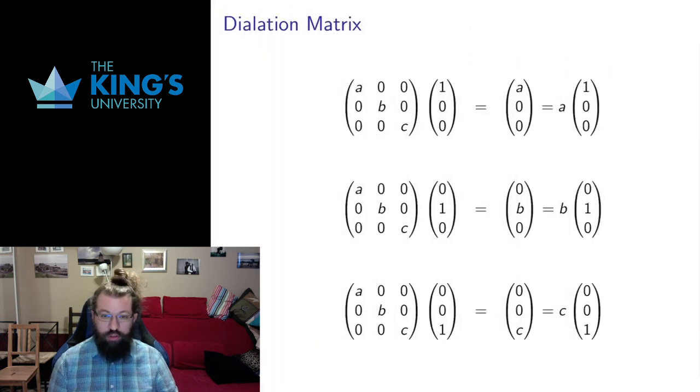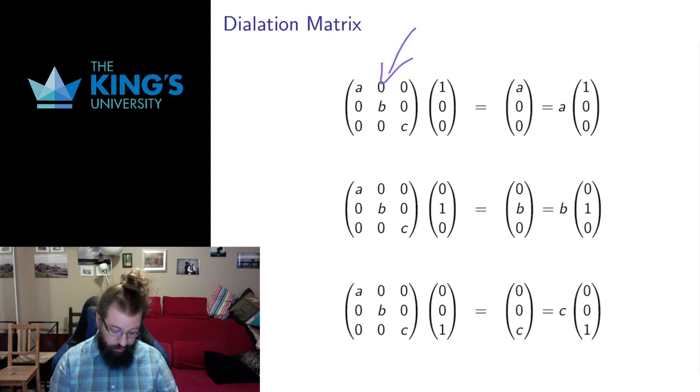I want to do one more example of the dilation matrix in R3. So here we have a dilation matrix in R3, and it acts on the axis vectors by dilating them. So it dilates the x direction by a, the y direction by b, and the z direction by c. That means that these axis vectors are multiplied by this number a.